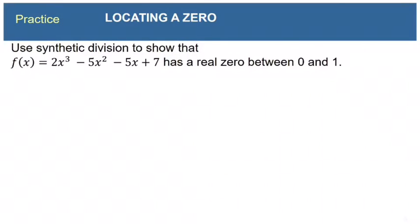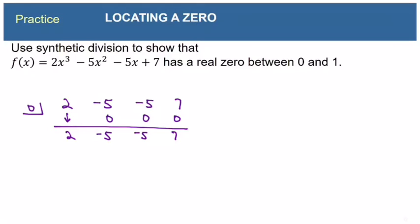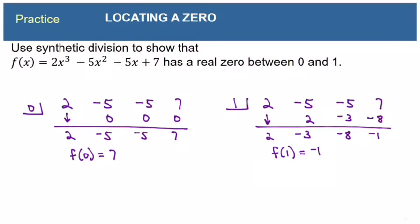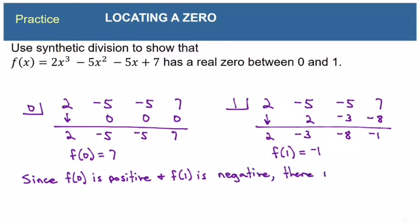Here's a practice problem — pause the video and try it yourself if you'd like. It says: use synthetic division to show that this function has a real zero between 0 and 1. We need to show that f(0) and f(1) are different in sign. Running synthetic division with 0 in the box gives f(0) equals 7, and with 1 in the box gives f(1) equals negative 1. Since f(0) is positive and f(1) is negative, the function crosses the x-axis between 0 and 1, so there's at least one zero there.